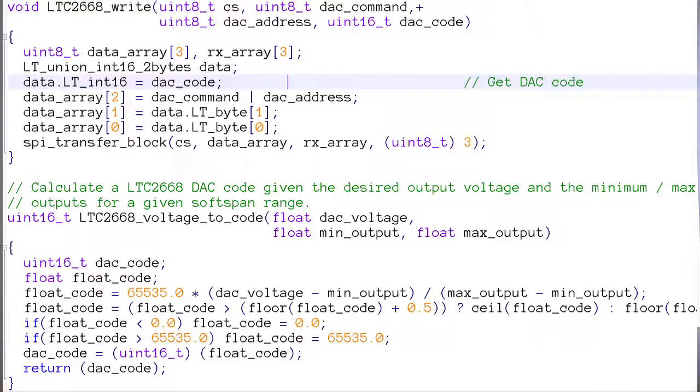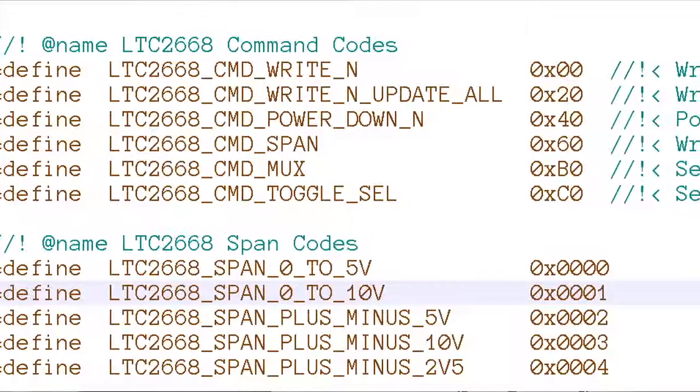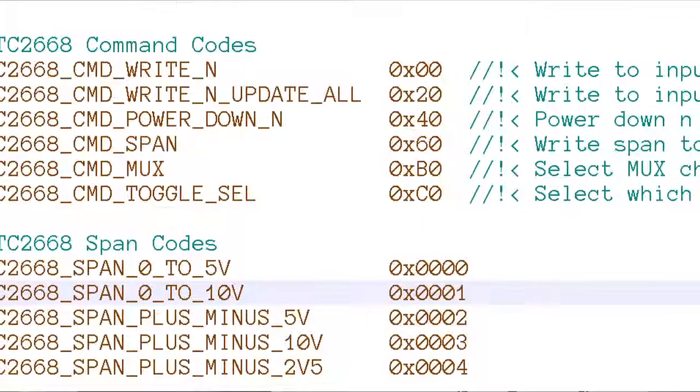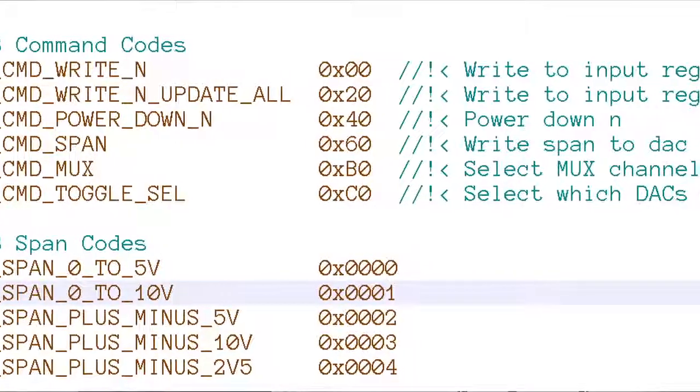There are functions that actually do the work of communicating with the LTC 2668, demonstrating proper control of the SPI bus. There are also utility functions that translate voltages to DAC code values and vice versa. Finally, the top-level demonstration program lets you test out the library functions with a simple terminal interface.